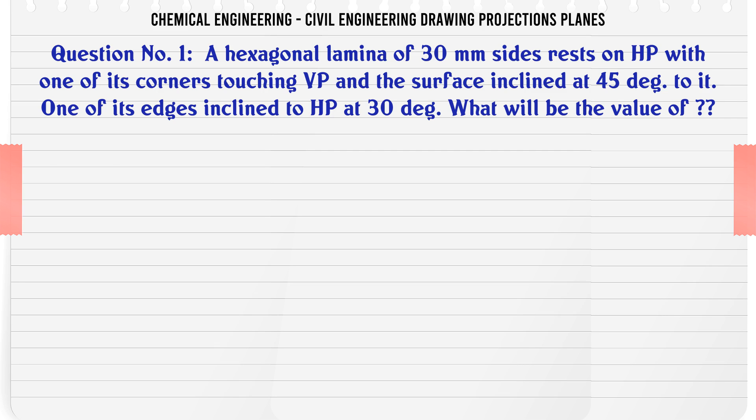A hexagonal lamina of 30 mm sides rests on HP with one of its corners touching VP and the surface inclined at 45 degrees to it. One of its edges inclined to HP at 30 degrees. What will be the value of?